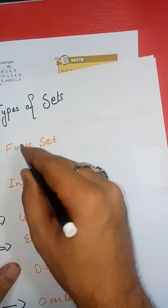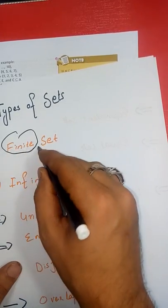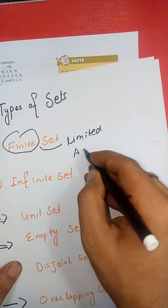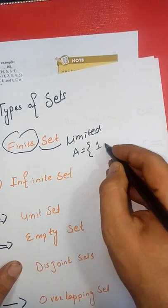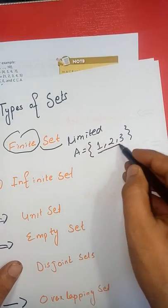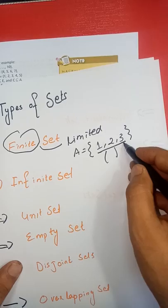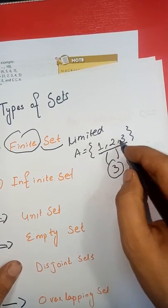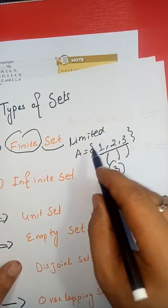Let's do one by one. The first type of set is finite. Finite is limited. It means limited. Let's say A = {1, 2, 3} then I closed it. So you can see three elements.